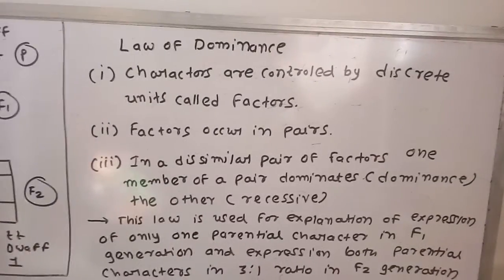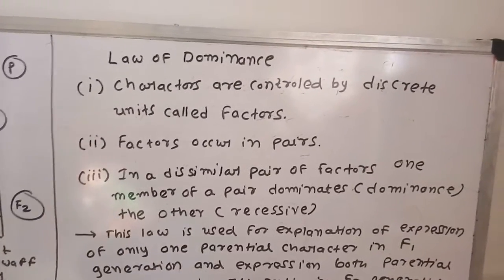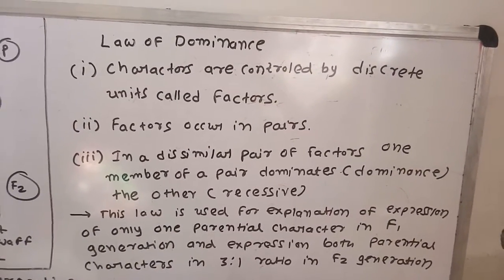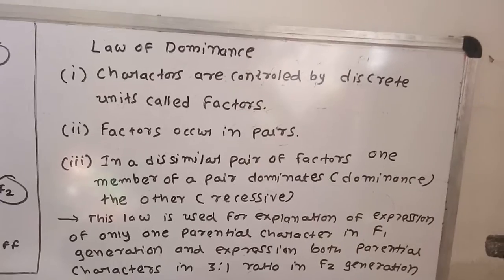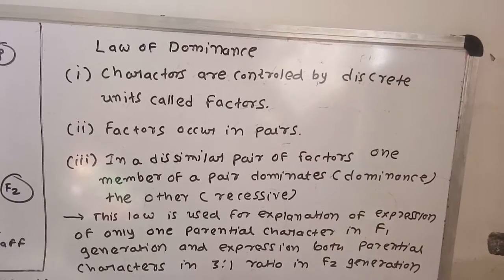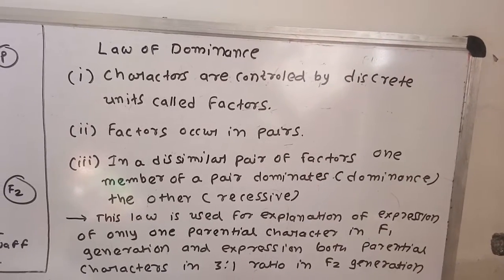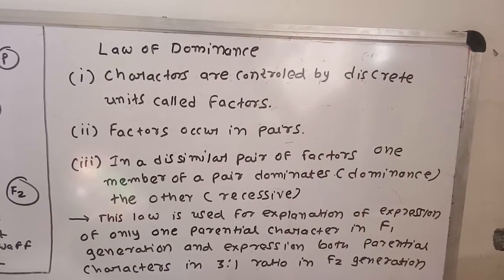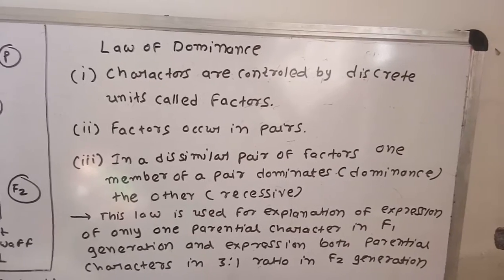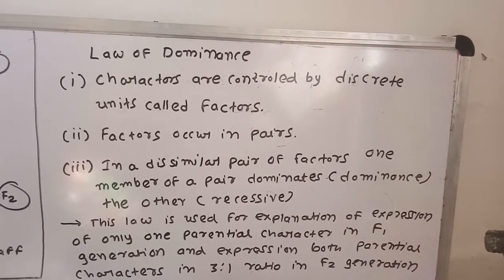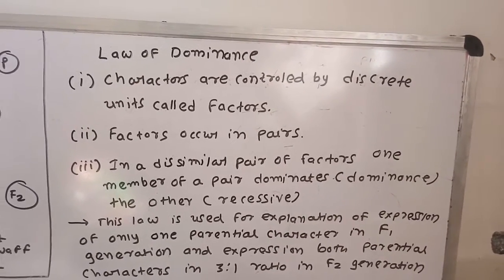In last lecture, we discussed Mendel's monohybrid cross using a Punnett square method. In this lecture, we will cover Mendelian laws — that is, the law of dominance and the law of segregation — based upon monohybrid cross.